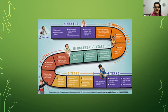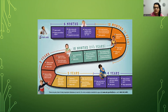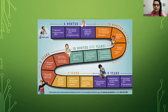Next, development happens in a step-by-step fashion. We can see that first a child is born, then at six months of age it is able to do certain activities, then it advances further at twelve months or one year old, and so on and so forth.